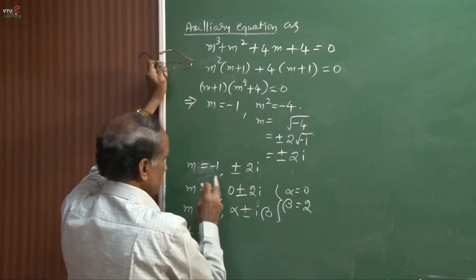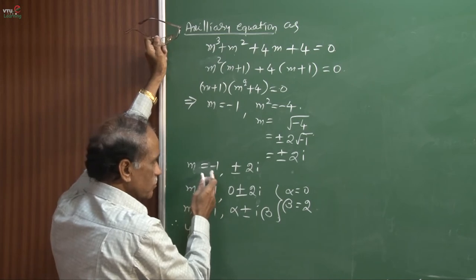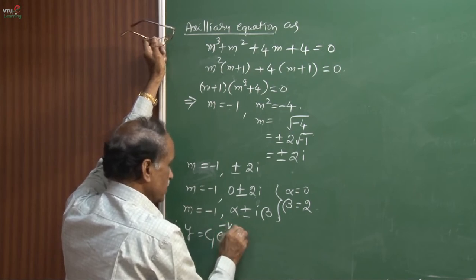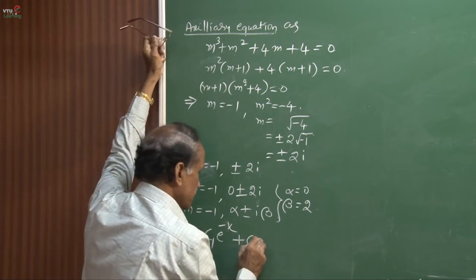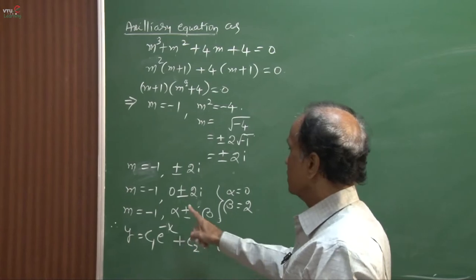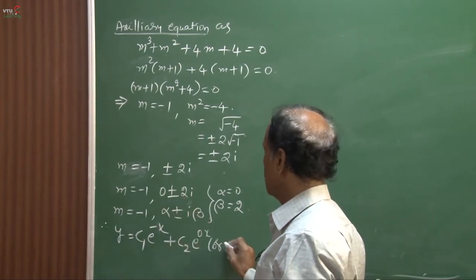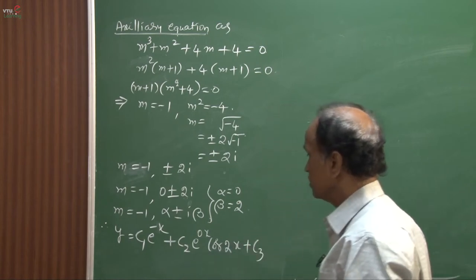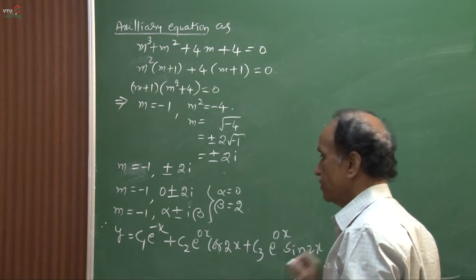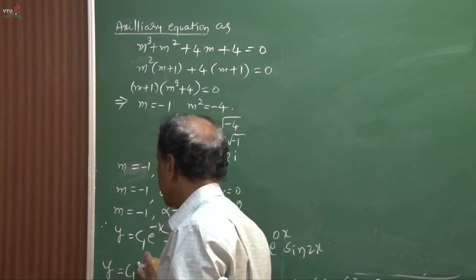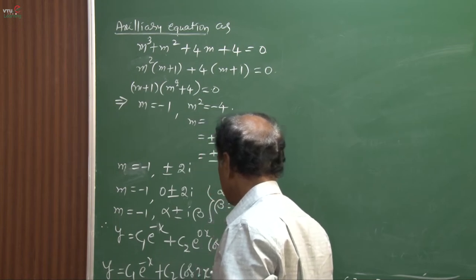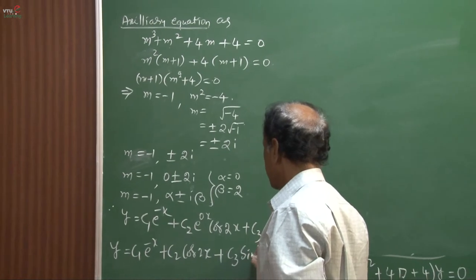For the solution: the first root m = −1 is not imaginary, so we directly write c₁e^(−x). For the imaginary roots with α = 0 and β = 2, we write e^(αx)[c₂cos(βx) + c₃sin(βx)] = e^(0·x)[c₂cos(2x) + c₃sin(2x)]. Since e⁰ = 1, the final solution is y = c₁e^(−x) + c₂cos(2x) + c₃sin(2x).